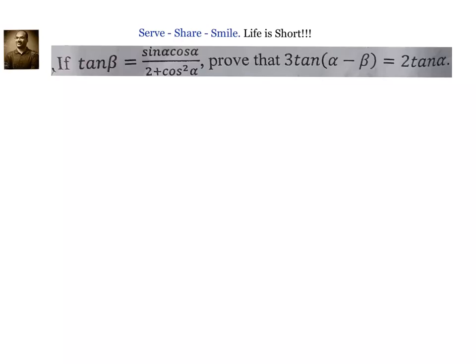Hello friends, welcome back, hearty welcome to you. Let us look at this problem related to trigonometry 11th grade compound angles. We have been given that tan β equals sin α into cos α divided by 2 plus cos squared α. We have to prove that 3 into tan of α minus β equals 2 tan α.